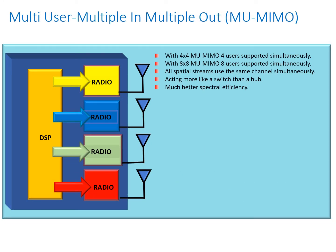With Multi-User Multiple In Multiple Out, or MU-MIMO, the quality of experience for users can be greatly enhanced. With a 4x4 system, MU-MIMO can support up to four users simultaneously. An 8x8 MU-MIMO system could support up to eight users simultaneously. All spatial streams use the same channel simultaneously, so much better spectral efficiency can be achieved. We can act much more like a switch than a hub.